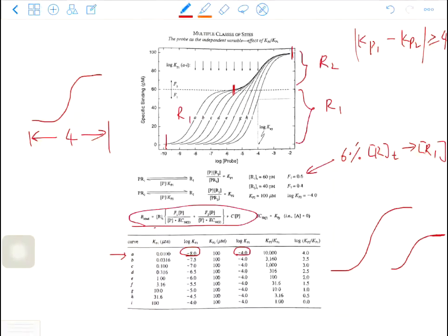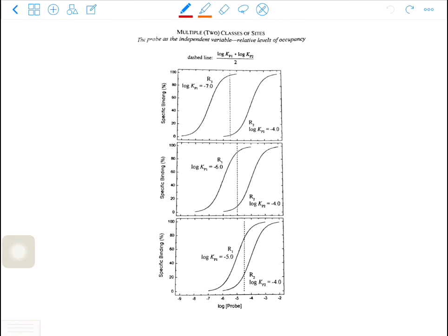For curve I, the curve I is a perfect rectangular hyperbola because the value of KP1 and KP2 are the same. So basically, these two equations are the same. If the system has two distinct types of receptors, KP1 should be different from KP2.